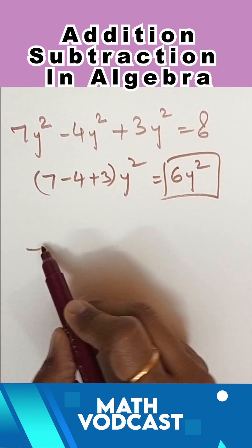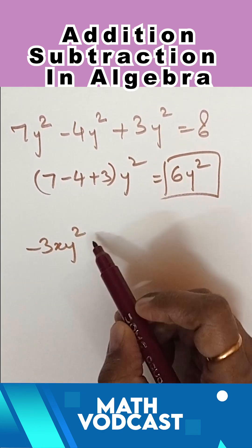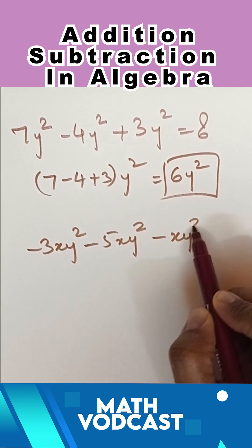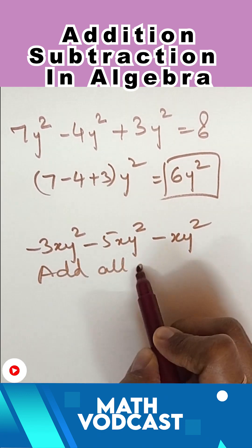I'll show you one more sum: minus 3xy² minus 5xy² minus xy². Add all of them together.